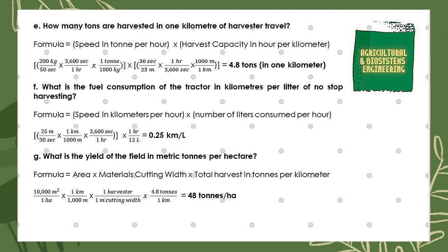Next, we solve for the fuel consumption of the tractor in kilometers per liter for no-stop harvesting. Using: speed (km/hr) divided by liters consumed per hour. Converting speed: (25 m / 30 s) × (1 km / 1000 m) × (3600 s / 1 hr) = 3 km/hr, then divided by 12 liters per hour, giving a final answer of 0.25 kilometers per liter.